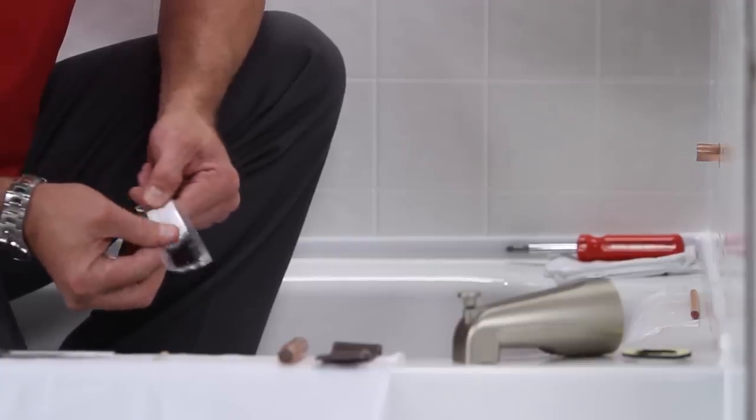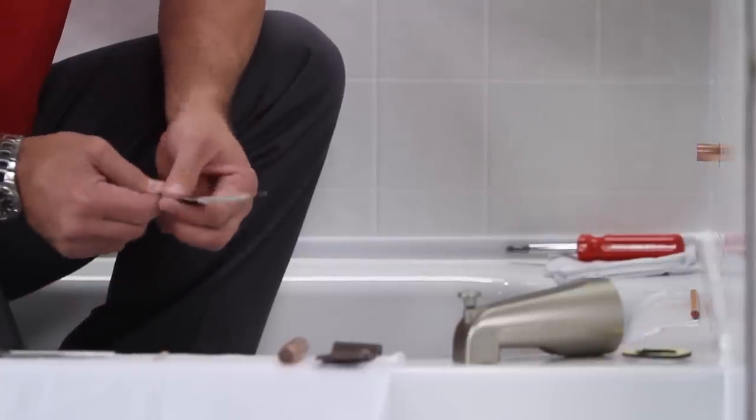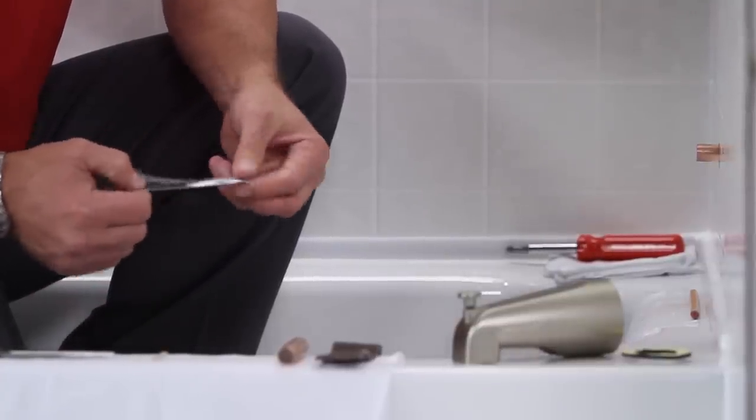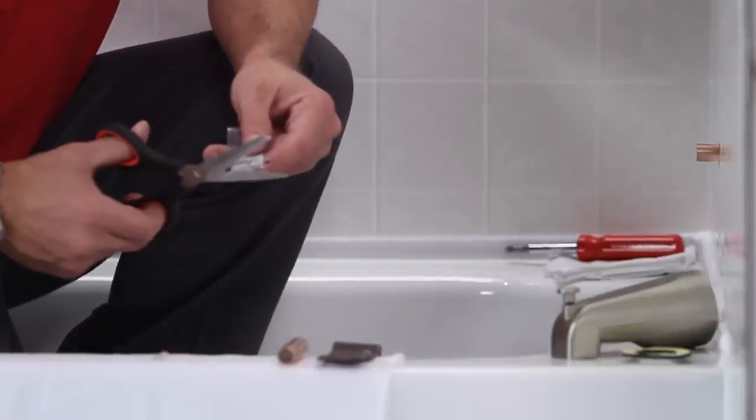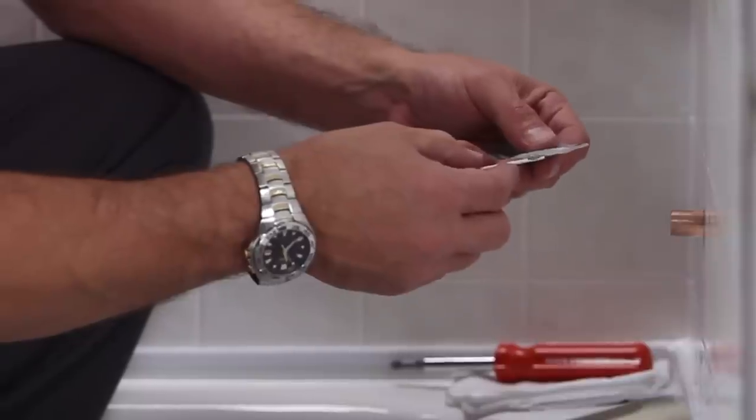Mix the epoxy in the special burst pouch until the mixture turns gray, signifying that the adhesive has been properly mixed. Cutting off a small corner and working quickly with the applicator stick, apply epoxy and coat the inside of the existing tube.